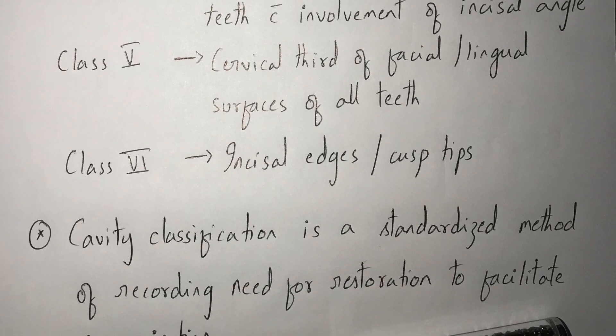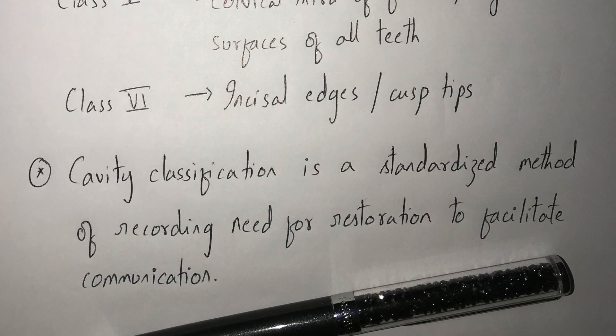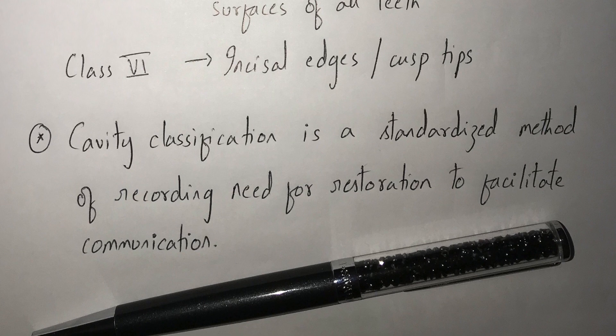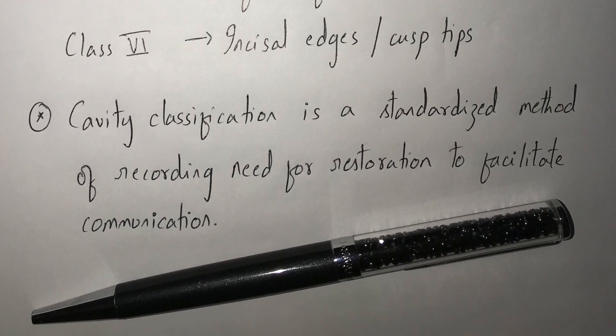And class 5, cavities present on cervical third on facial or lingual surfaces of all teeth. Whereas class 6, they are present on incisal edges of anterior teeth as well as cusp tips of posterior teeth.